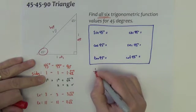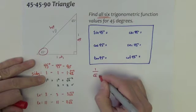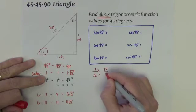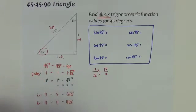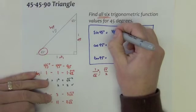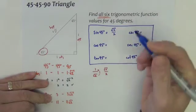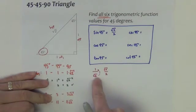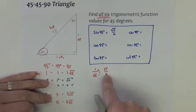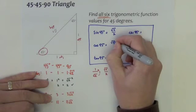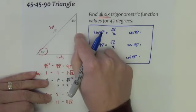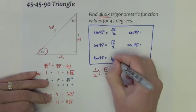Sine of 45 would be the opposite 1 divided by the hypotenuse, square root of 2. We'd want to bring that radical up to the top, so we end up with square root of 2 over 2. So that is the sine of 45, square root of 2 over 2. Now, since cosine is adjacent over hypotenuse, and the adjacent is 1 just like the opposite, this fraction also represents the cosine, and so would its rationalized form. So cosine of 45 is also square root of 2 over 2. Tangent of 45 is opposite over adjacent. 1 divided by 1 is 1.